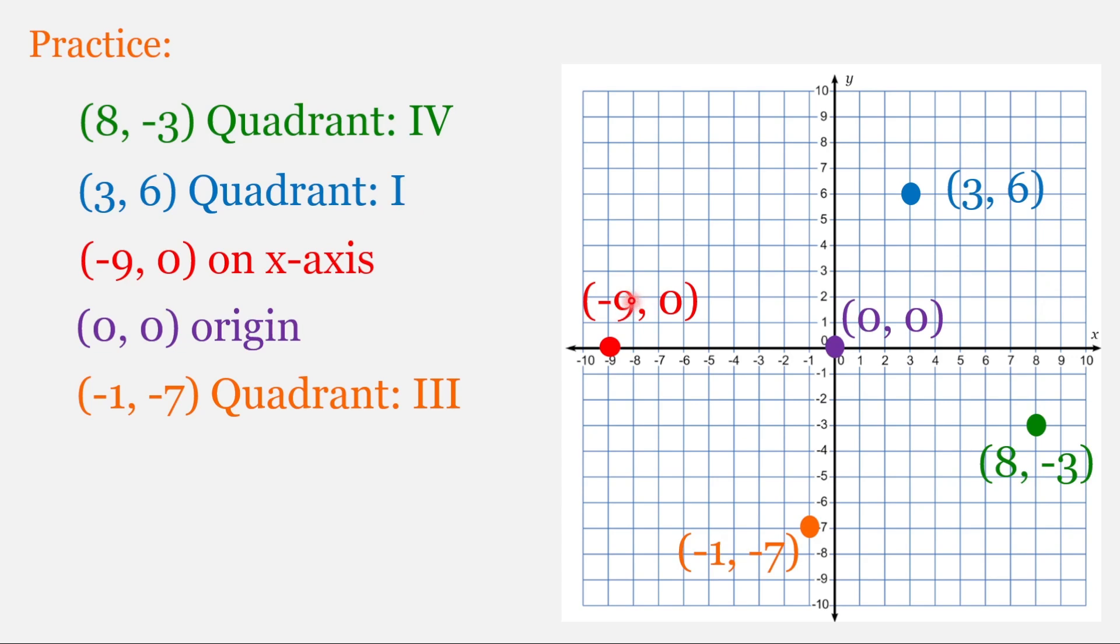For the red point, our x value is negative 9. We're to the left of the origin. And the y value is 0. We did not go up or down. Anytime you have a y value of 0, you're on the x-axis. So this point is not in a quadrant.